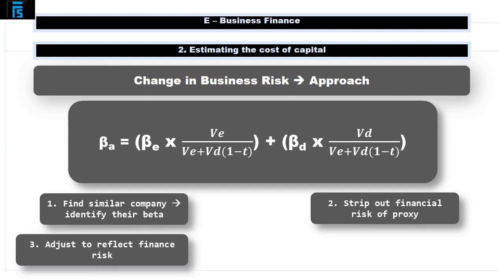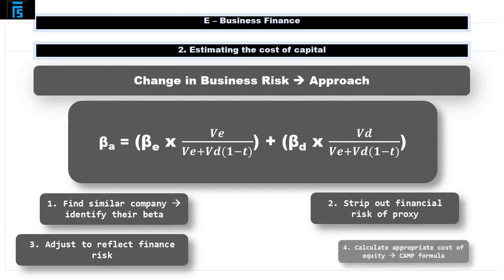This beta recognises the total risk profile of the proxy, both business and financial, and is referred to as an equity or geared beta. Whilst this beta reflects the business risk of the new project, it is unlikely that the relative debt levels in the proxy and the project will be the same. Accordingly, strip out the financial risk of the proxy — referred to as ungearing the beta — using the ungearing formula, where the asset beta equals the equity beta multiplied by the value of equity divided by the value of equity plus the value of debt net of tax.